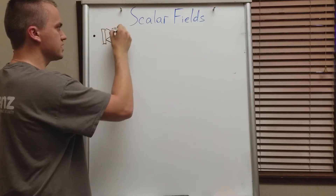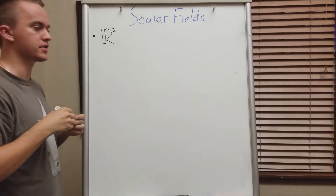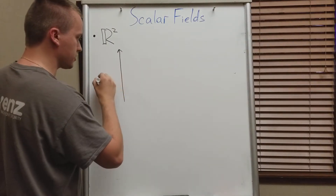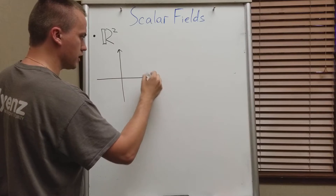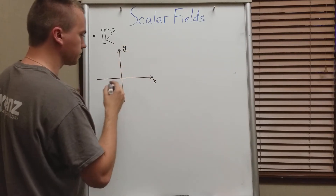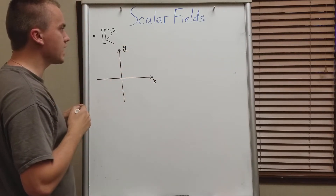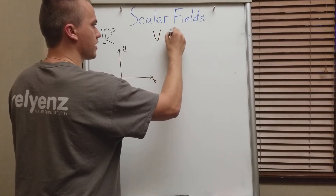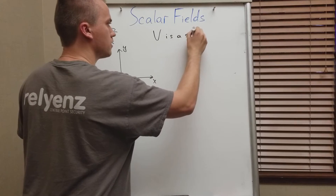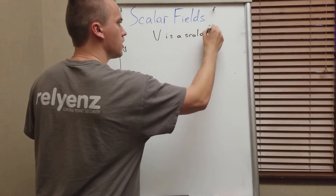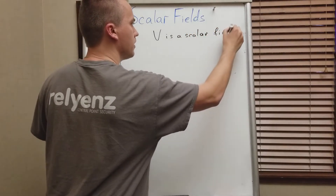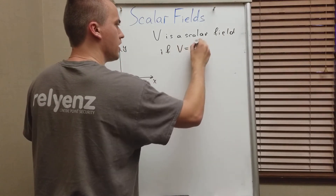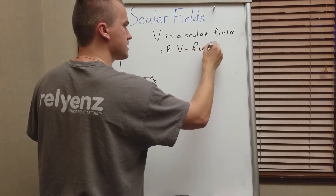R2 is the region where we're going to define our scalar field. R2, in other words, is just Cartesian coordinates in x and y. And then we're saying that V is a scalar field if we can write V as a function F in terms of x and y.